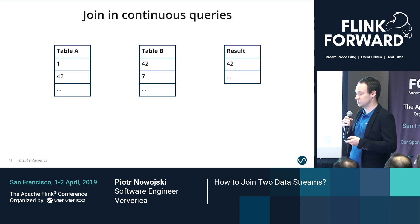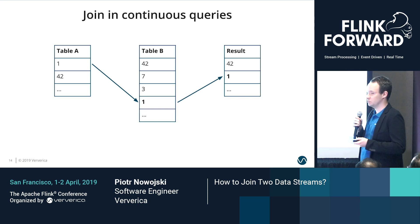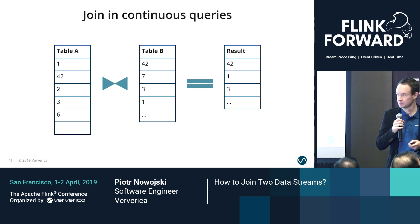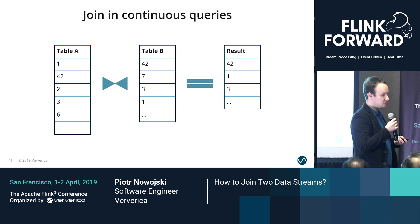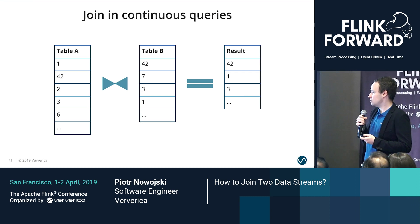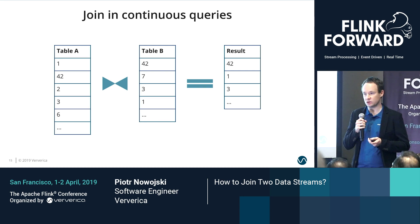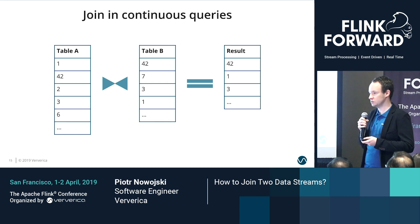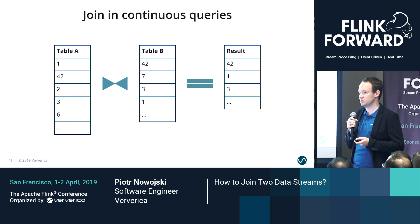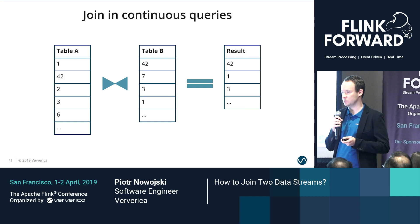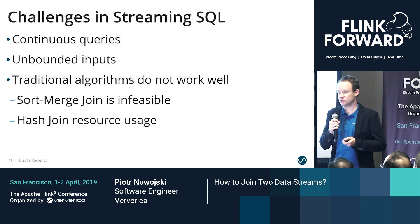Then we start getting records from table B — seven, three — they don't match with anything. Finally we get a record from table B that matches something, and we produce a result. After processing the same kind of input as in the batch, our result is also the same. However, there are two things to note: this query hasn't ended yet, so we are still expecting more records to come from either table, and the result can also grow. Secondly, we cannot predict or enforce the order from which side records are coming first — in batch we could do this.